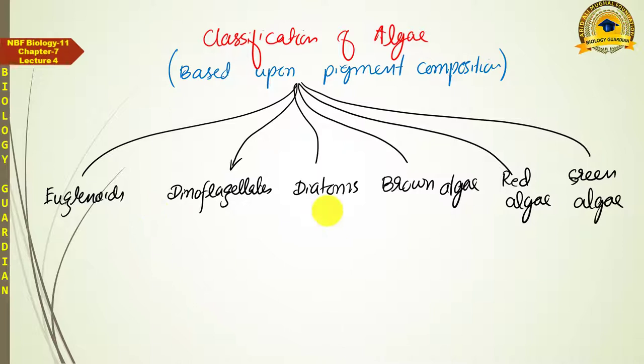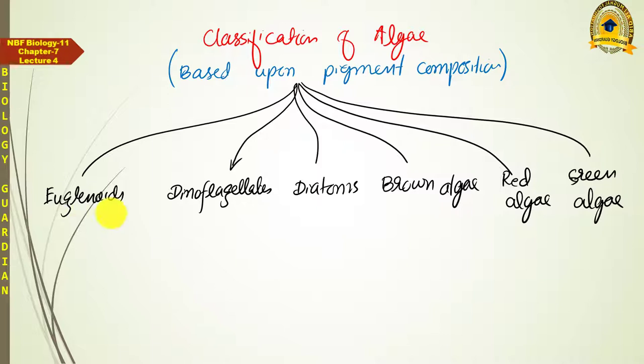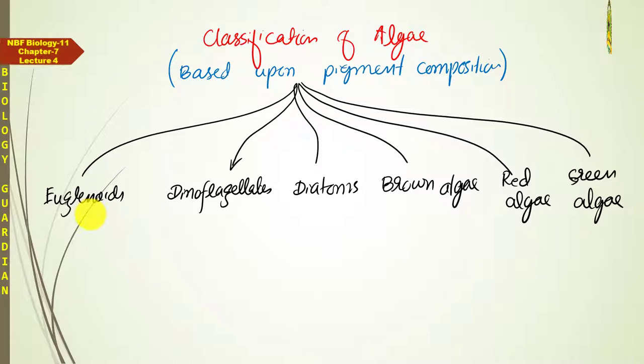Chlorophyll A is necessarily present in all groups of algae, but the remaining pigments vary among different groups. Let us now explore these different groups one by one, covering their major features and the important questions that can be asked in exams.